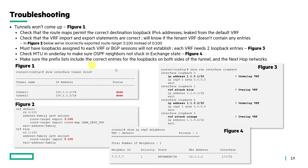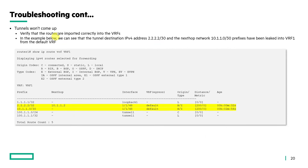You also want to ensure the prefix lists include correct entries for the loopbacks on both sides of the tunnel and the next-hop networks. To continue troubleshooting when tunnels won't come up, verify routes are imported correctly into the corresponding VRFs. In the example shown, tunnel destination 2.2.2.2/32 and next-hop 10.1.1.0/30 prefixes have been leaked into VRF1 from the default VRF — this is an example of a properly configured setup.